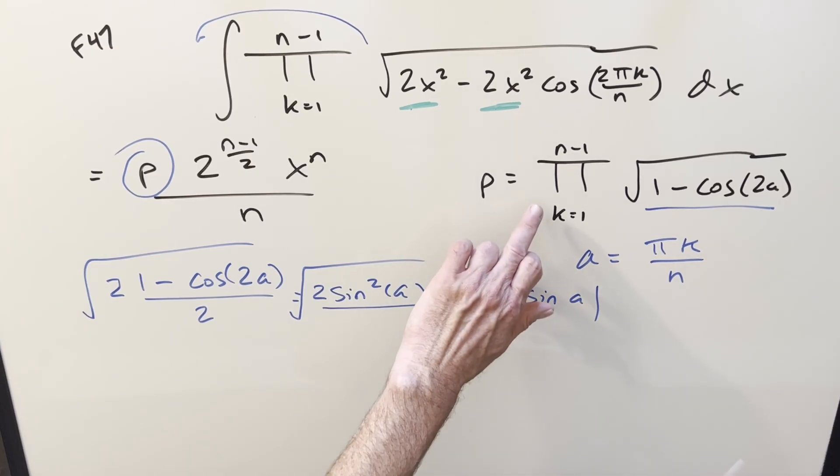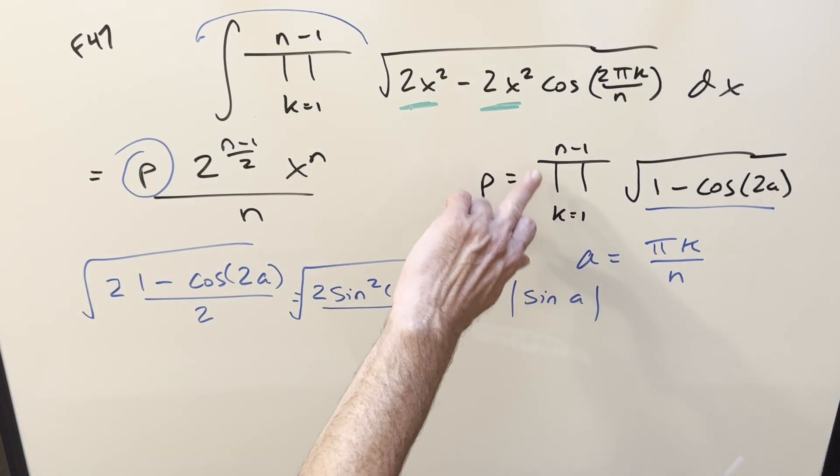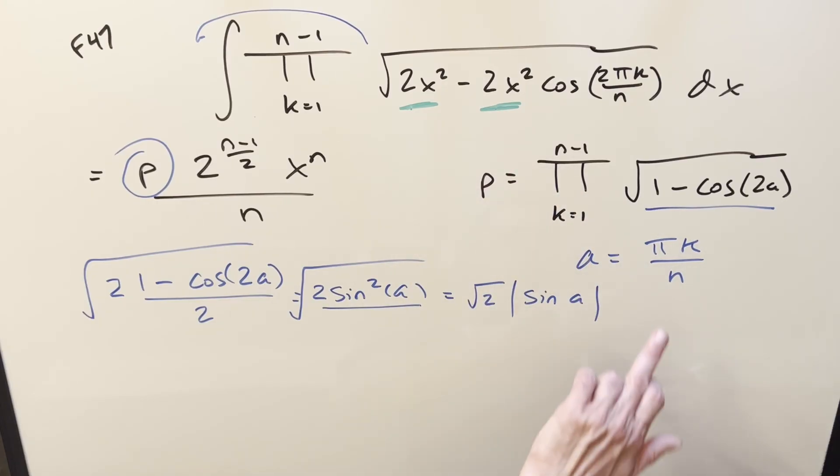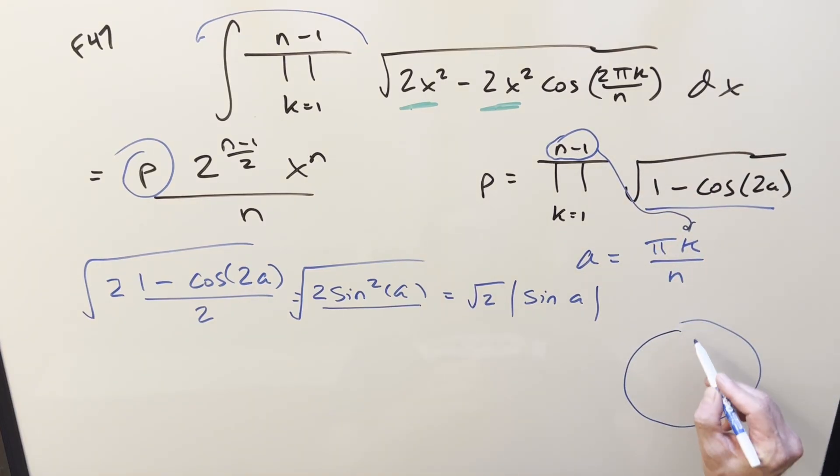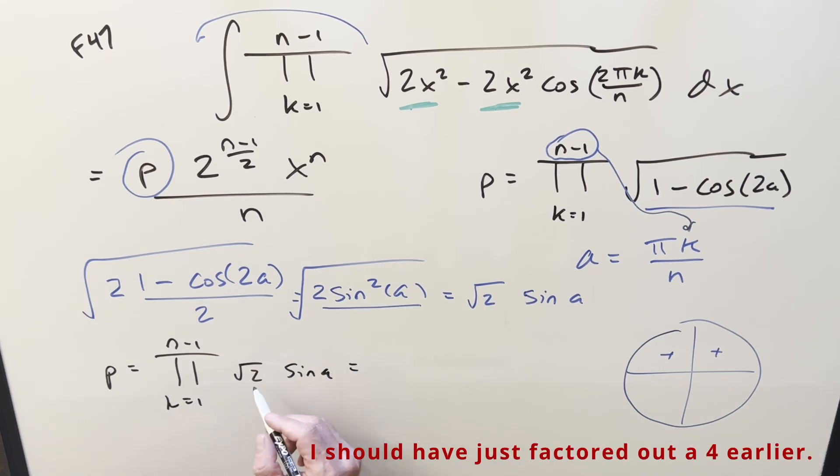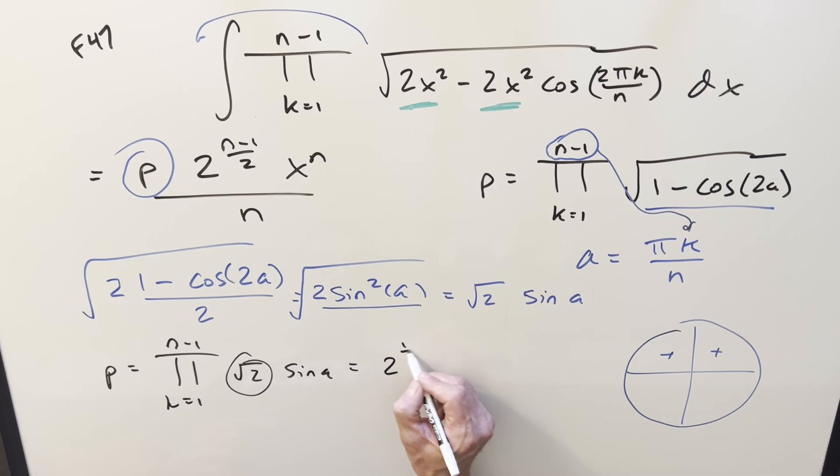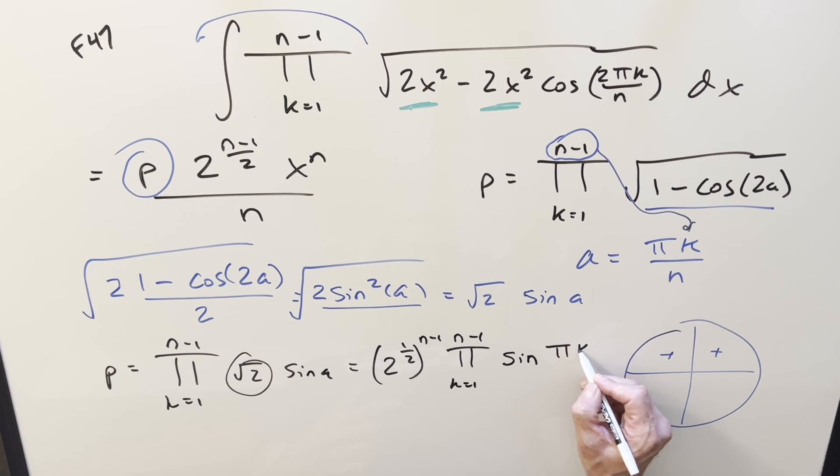The reason is because if you look what's happening, we're going from k equals 1 to n minus 1. So that means we never reach n. So if you plug the greatest value here in for k, we never quite reach pi. So we're looking at just quadrants 1 and 2 here. Sine's always positive. And that allows me to drop this here. So using this in our product p, we're going again, k equals 1 to n minus 1. And we have square root of 2 sine a. But for the square root, we can do the same thing we did before and kind of pull it out because we're just going to be multiplying it n minus 1 times. So this is going to be 2 to the 1 half to the n minus 1. And now we're just looking at the product of sine a. But I think this is a good time to put it back. So sine a is sine pi k over n.